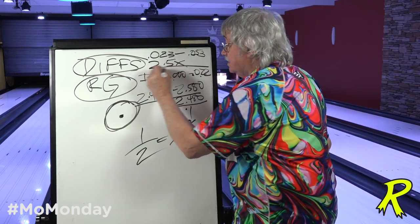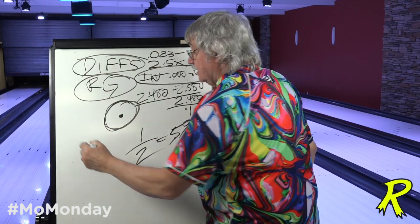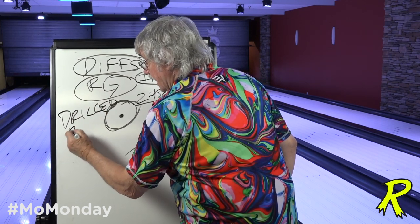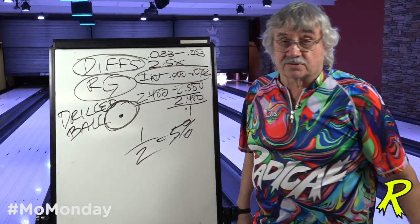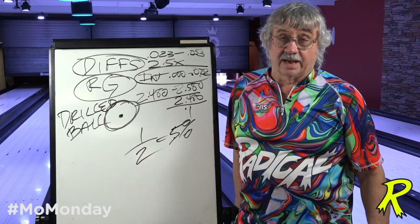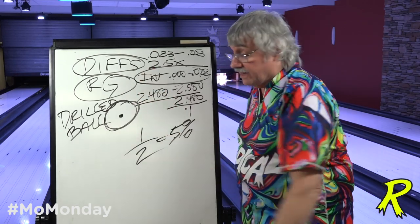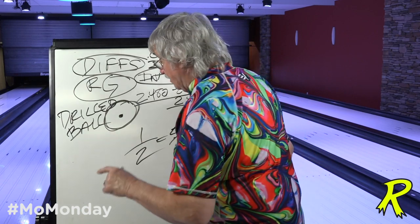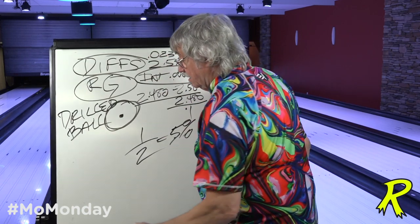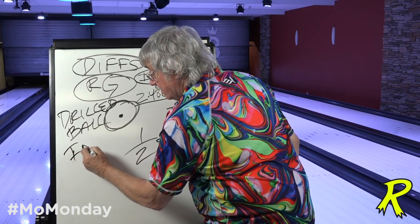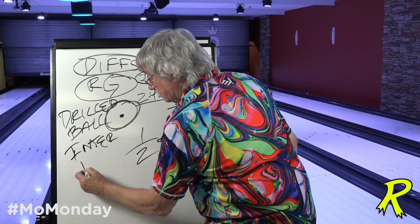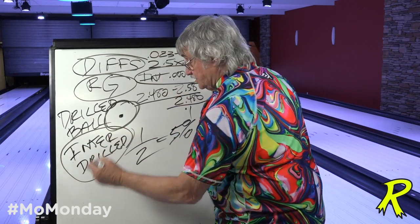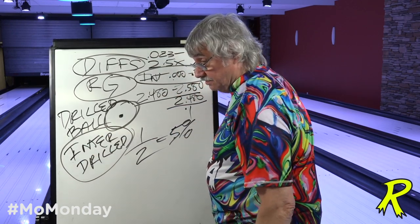It's the drilled ball numbers that determine the motion. When I do seminars, I ask people: is there anybody in this room that cares how an undrilled ball rolls? And they all laugh — but they all pay attention to the numbers of the undrilled ball. The most important mass property in a bowling ball is the intermediate diff of the drilled ball, because that number is the indicator of the shape of the motion.